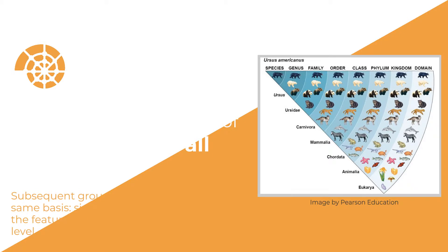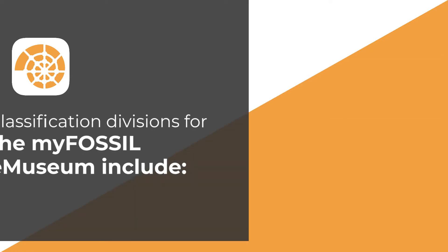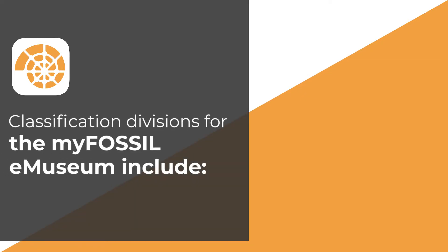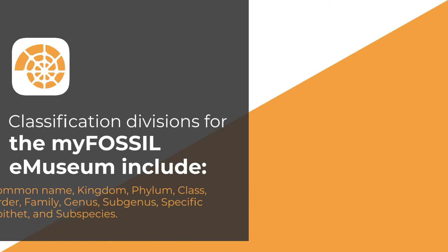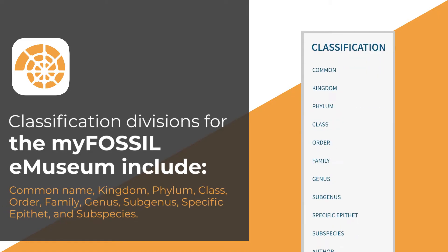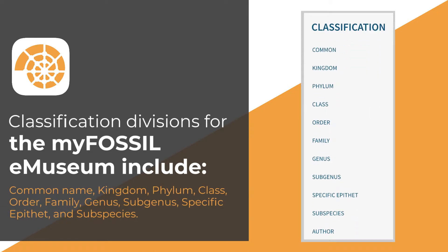Classification divisions for the MyFossil eMuseum include common name, kingdom, phylum, class, order, family, genus, subgenus, specific epithet, and subspecies. If the name of the author is known, it can also be included.